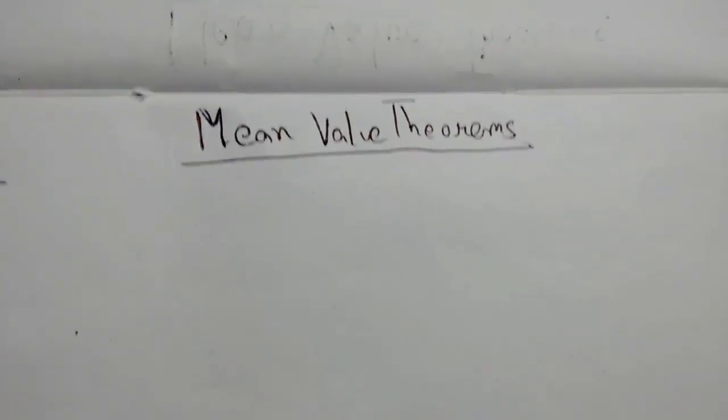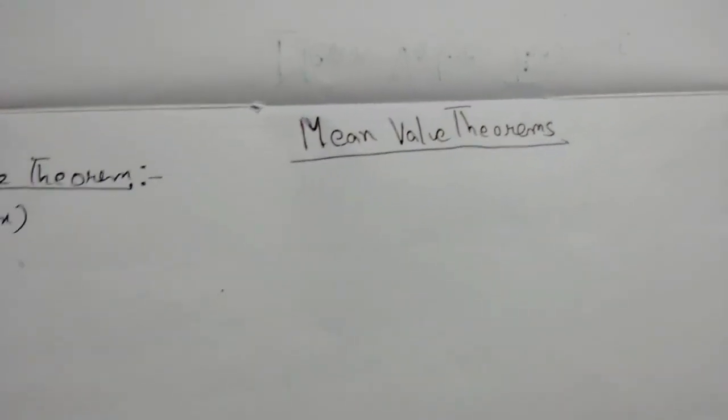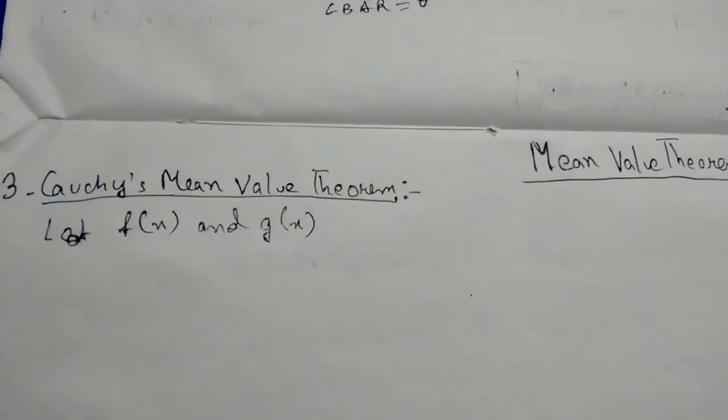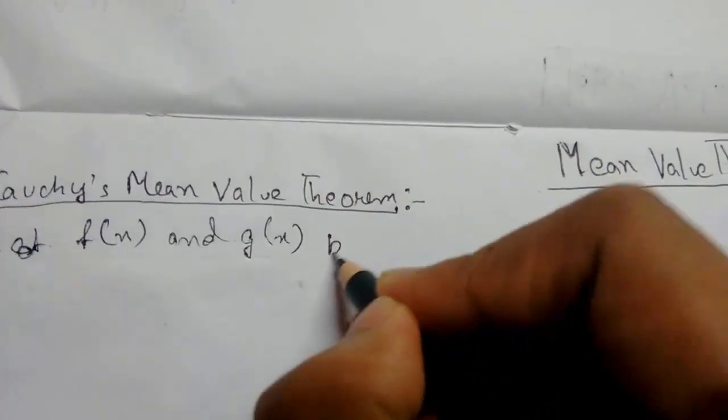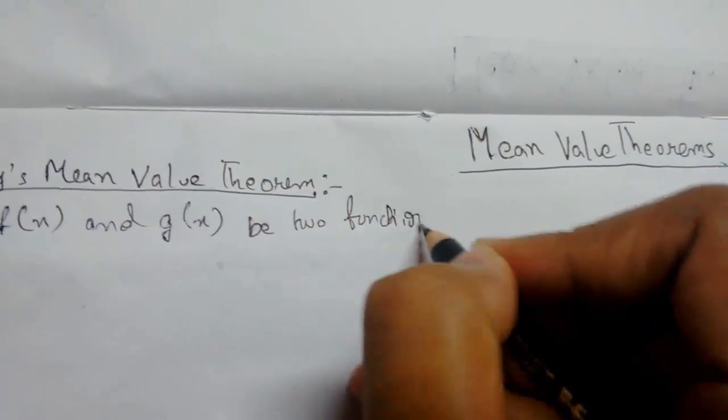Welcome everybody, in this video lecture we'll be learning about mean value theorems. Number three is Cauchy's mean value theorem, or Cauchy's MVT. Let me define it. Let f(x) and g(x) be two functions which are defined in the closed interval [a, b] which satisfies the following conditions.